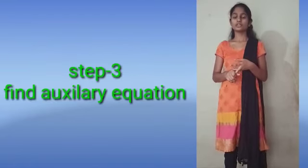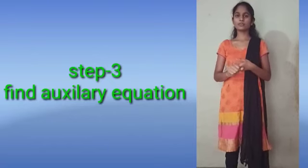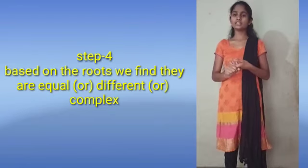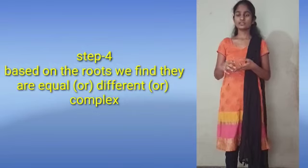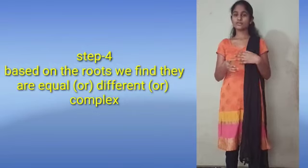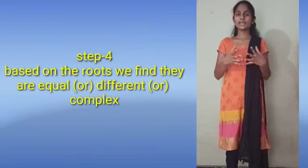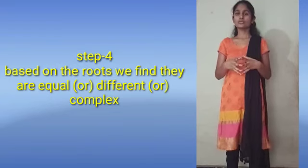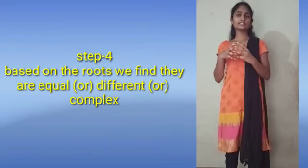Step 3: find the auxiliary equation by substituting. Step 4: based on the roots obtained, identify which case applies — whether the roots are real and equal, real and different, or complex. Then write the corresponding general solution. This is the complete method for solving the general solution.